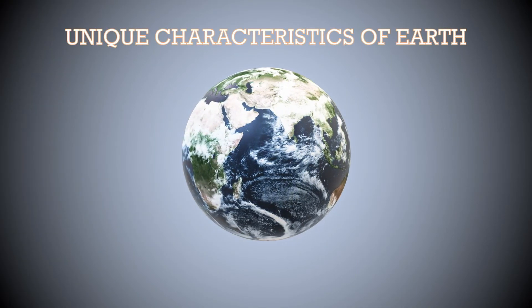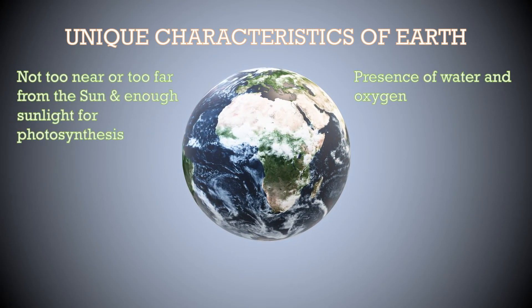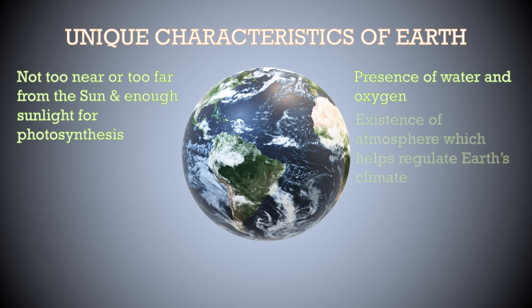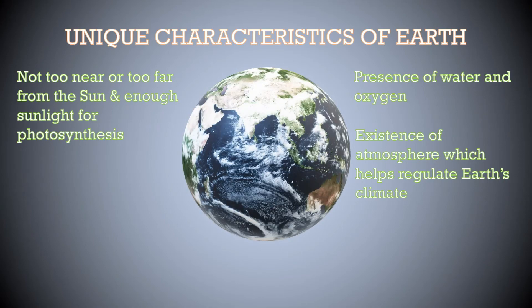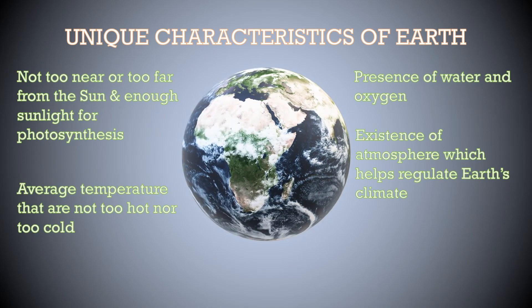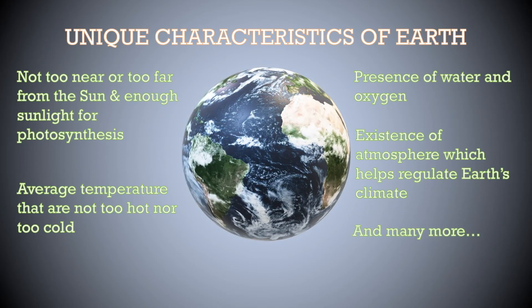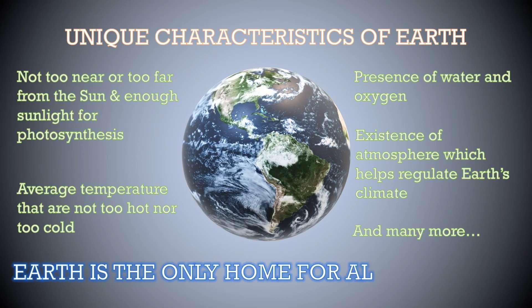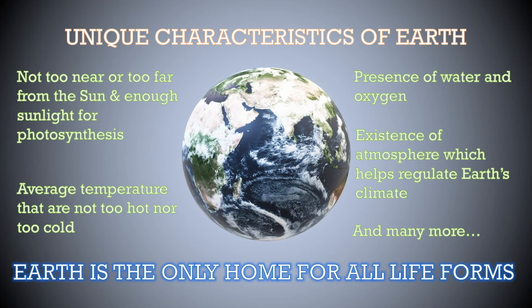This is our earth. The earth is a very special place. First, it has oxygen, it has water, and the location of earth in the solar system is not too near or too far from the sun. This gave us enough sunlight for the plants to perform photosynthesis. Earth exists with atmosphere. It helps to regulate our earth's climate. The average temperature that is not too hot or too cold allows us to live on earth. There are many more characteristics that made earth a unique planet. For all we know, earth is the only home for all life forms. We should really take care of our own planet.